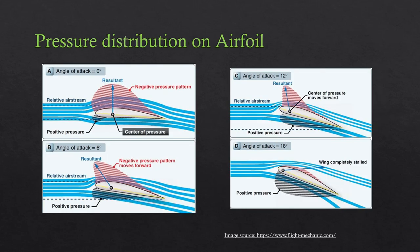Let us understand how the pressure distribution on an airfoil varies with angle of attack. At zero angle of attack, we have negative pressure on the upper surface and positive pressure on the lower surface, so the resultant force R acts along the center of pressure. As the angle of attack is increased, the pressure distribution changes, the resultant force R also varies, and the location of the center of pressure also varies — it tries to move a little forward. If we further increase the angle of attack to say 12 degrees, the pressure distribution changes again and the center of pressure moves further forward.